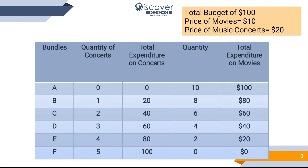The total amount in your pocket is $100, price of a movie is $10, and price of a music concert is $20. Now start with the consumption bundle choices. Bundle A shows that we are going to consume zero concerts — no expenditure on concerts — and consume all $100 on movies, so we watch 10 movies (10 × $10 = $100). Bundle B tells us we consume one concert, spending $20 on it and keeping $80 for movies, so 8 movies (8 × $10 = $80).